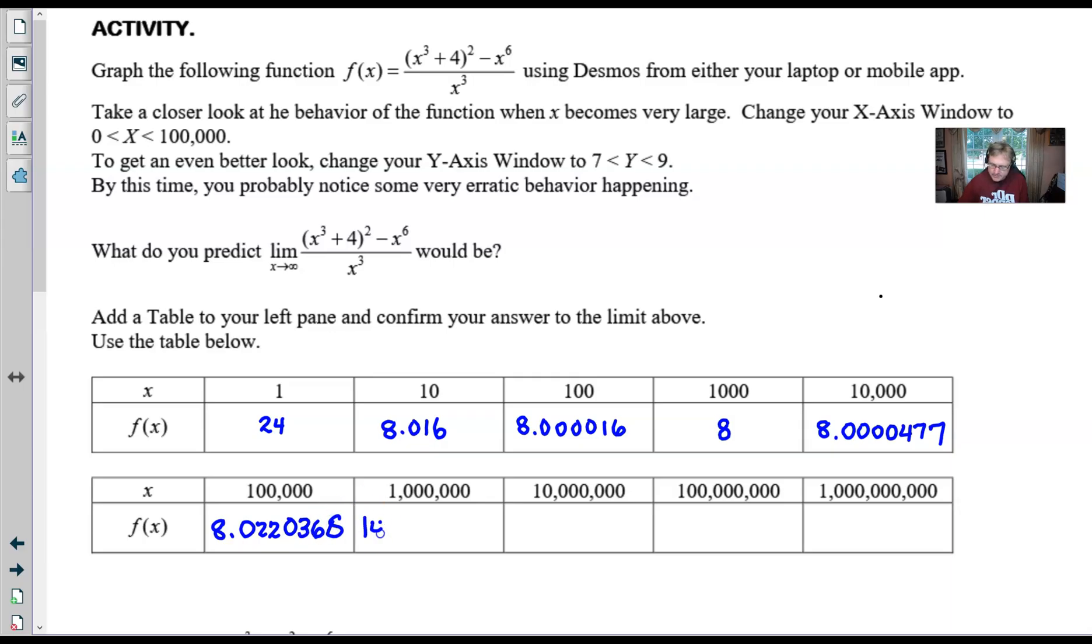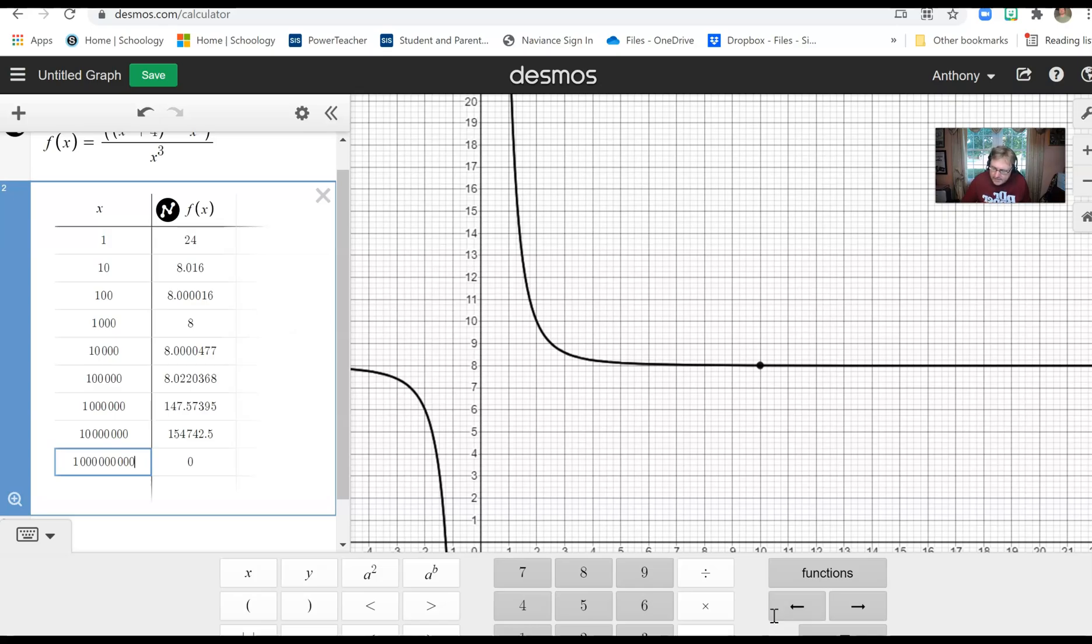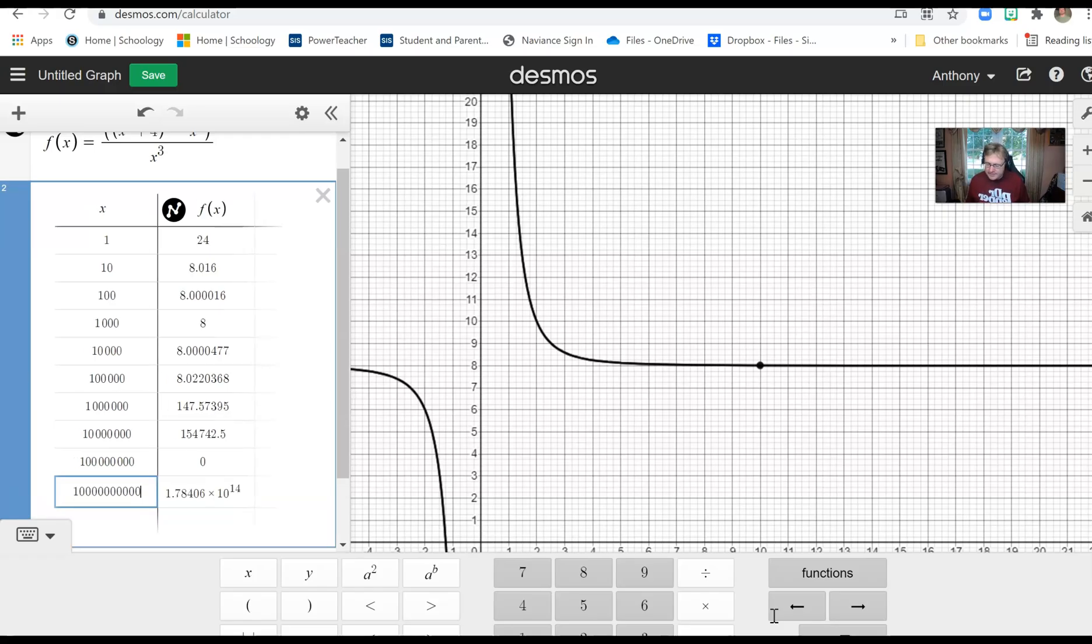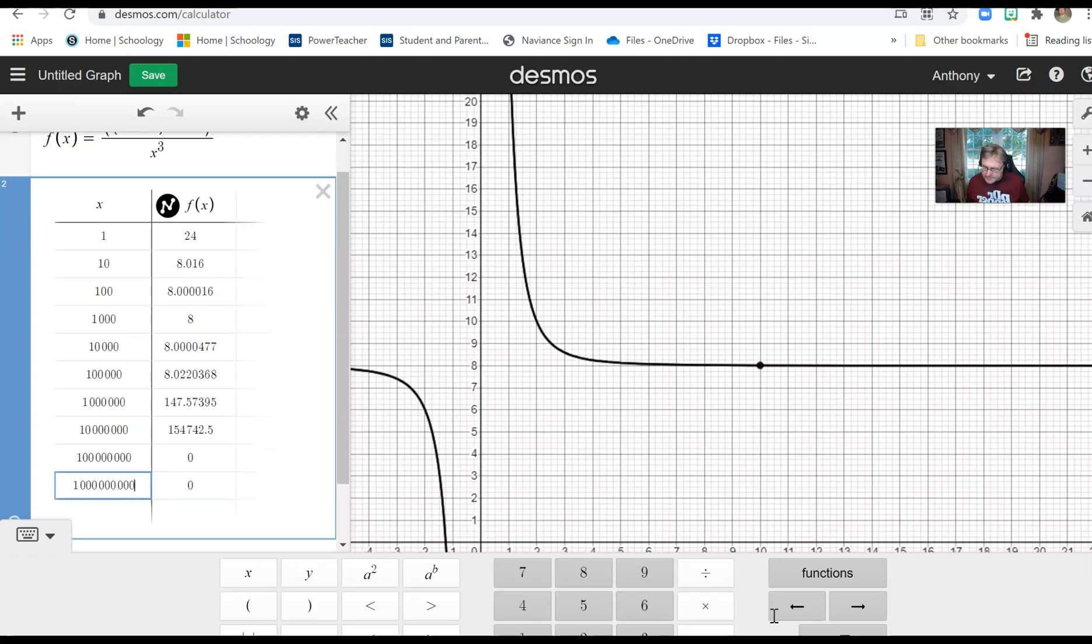Here we have 477 at the end. Here we have 8.0 and then a bunch of stuff: 220368. And then when we got to a million, some crazy things happened. We went to 147 and some change, and then at 10 million it got even crazier. I think we're at 154742.5. And at 100 million, I never did put in 100 million. There is 100 million. Now let's put in one billion. You know what, I don't know if it's going to matter a whole lot because you see that you get zero in both places.